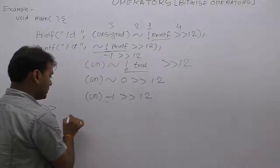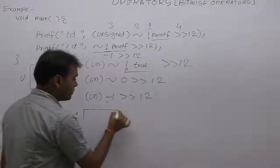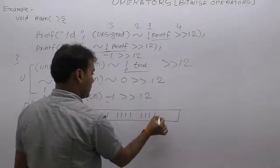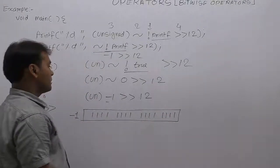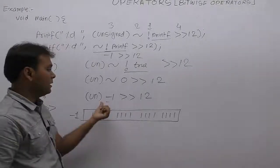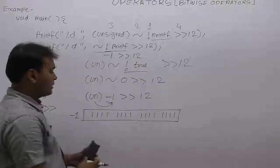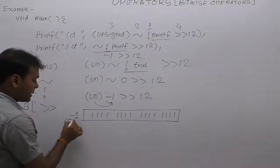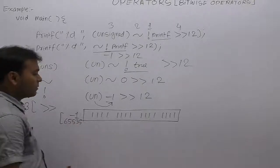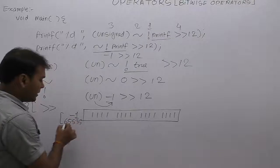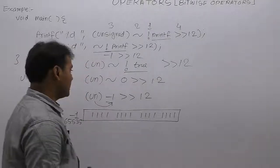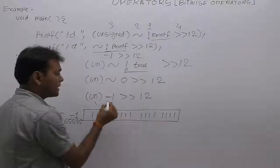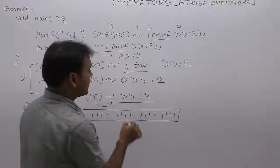According to type casting, first apply type casting. In this case, the binary number of -1 is sixteen times one — all sixteen bits are 1. According to type casting, no physical change happens in memory, but logically, as type casting to unsigned is applied, this -1 is now treated as unsigned. The unsigned equivalent value of -1 (all sixteen 1s) is 65535. Type casting changes the meaning during shifting.